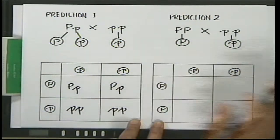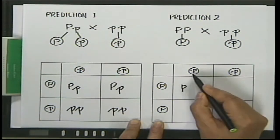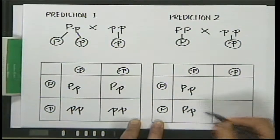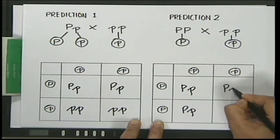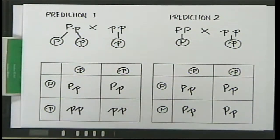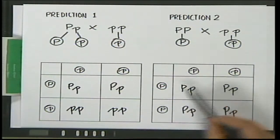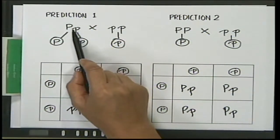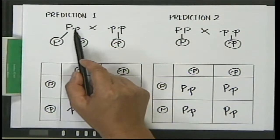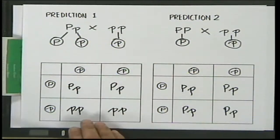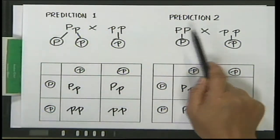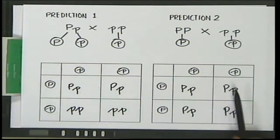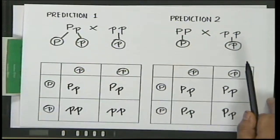For the second prediction — if the unknown plant is homozygous dominant — it can produce only one type of gamete (P), and the recessive parent also produces only p. So all gamete combinations in the Punnett square yield only one type: Pp heterozygous offspring. Crossing with the first prediction, where the unknown plant is heterozygous, produces a mix of Pp and pp offspring.